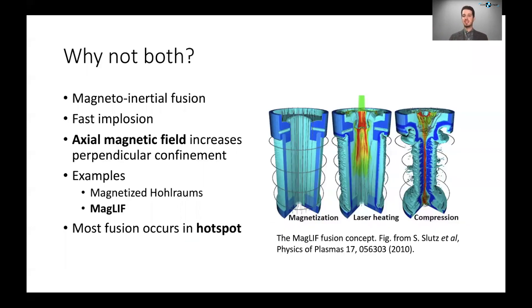So you might ask, why not do both? Why not have a magnetic field to inhibit the transport of particles and heat out of the plasma, while also doing a fast reaction at very high density? And this is the idea behind what's termed magneto-inertial fusion, the main example of which is magnetized liner inertial fusion.